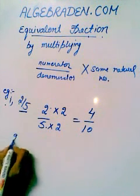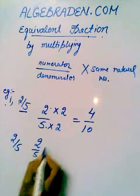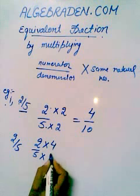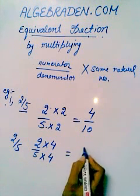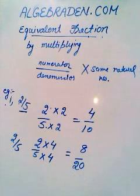In other ways, we can also multiply 2 over 5, multiply by 4 and denominator with 4, it will give us 8 over 20.